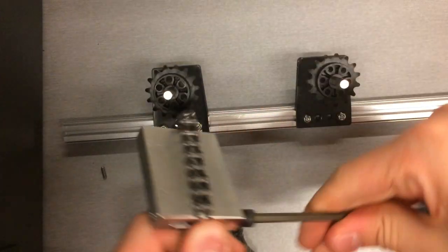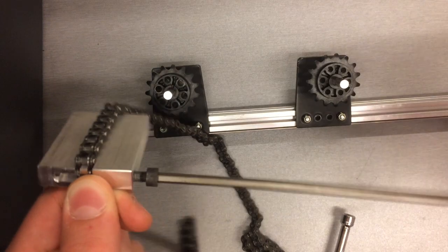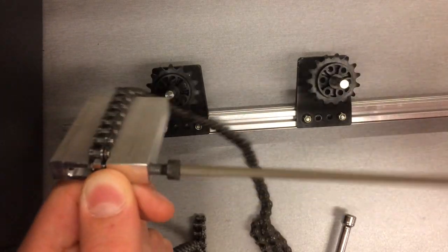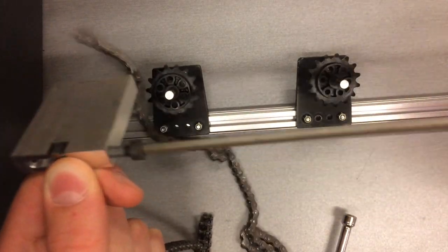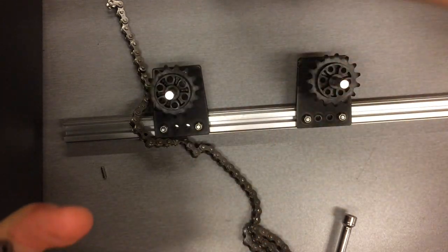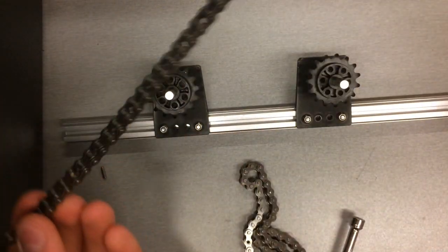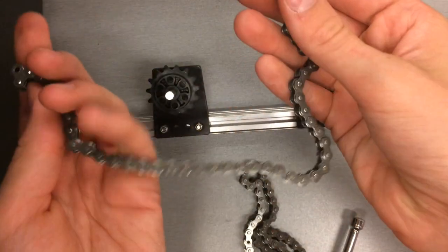Once the pin falls out, make sure to loosen the screw. Then you can pull the chain out from the chain breaker. You will now have two sections of chain. The shorter section is the section that you will wrap around your sprockets.